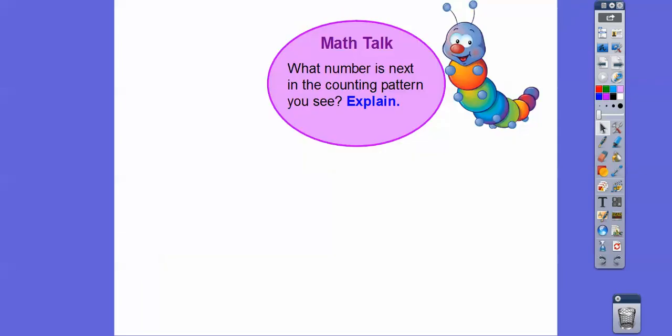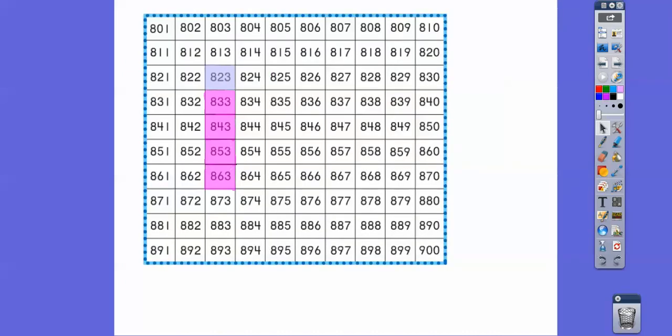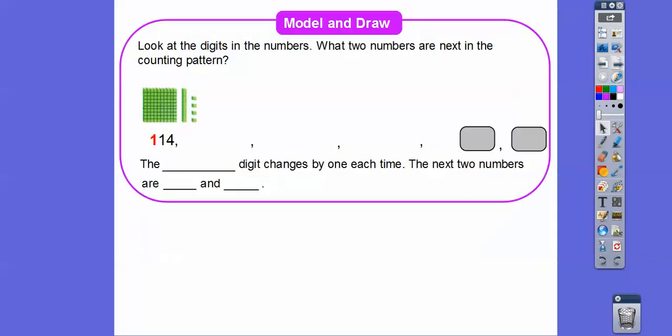Alright. So what number is next in the counting pattern that you see and explain? So right here, remember we added to the tens digits by one. So this two, which is two tens, became three tens, four tens, five tens, six tens. So what's the next number? Right here, seven tens. 873 would be the next number because it increases in the tens digits.